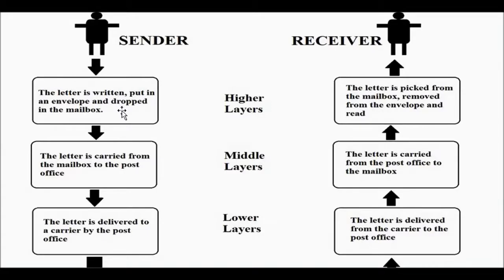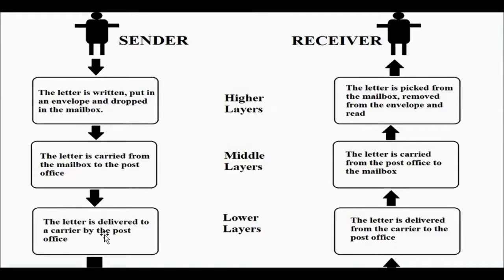The postal system has a sender and a receiver — a sending party and a receiving party. From the sender's side, the sequence of steps is: first the letter is written, put in an envelope, and dropped in the mailbox. Then the letter is carried from the mailbox to the post office by a postman. Then at the post office the letter is delivered to a carrier which sends the letter to the particular destination — that carrier can be air transport, rail transport, or any land transport.